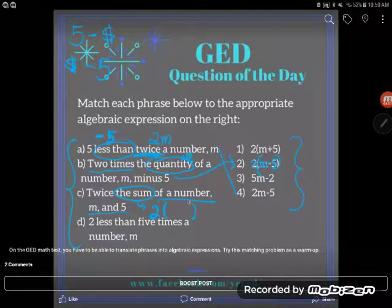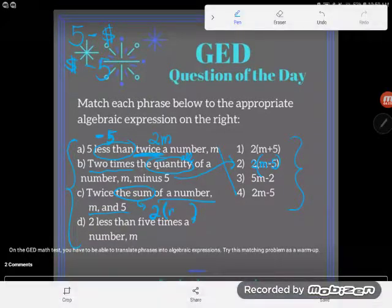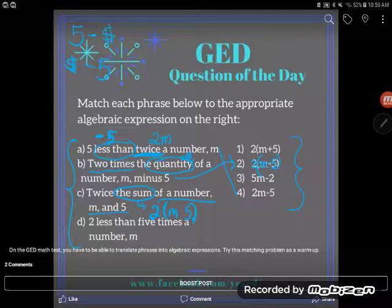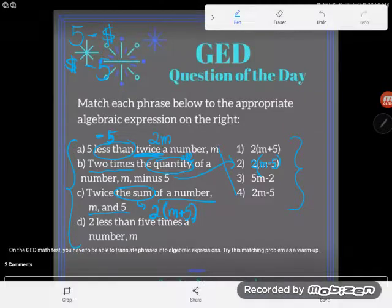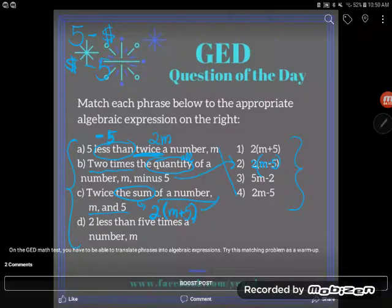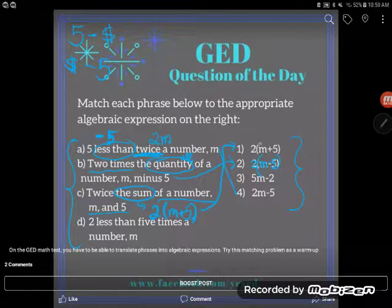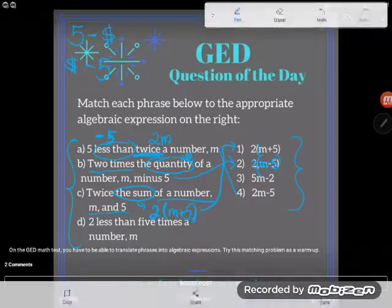So twice the sum of a number M and five. And again, we said sum means the answer when you add. So I'm going to have to add M and five. Okay? And so C has got to match with number one. Twice the sum of a number M and five. Okay?